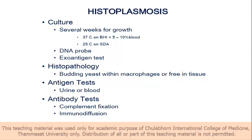In the U.S., whenever thermally dimorphic fungi are suspected, they will not use lacto-phenol cotton blue wet mount — they use only serological tests because they are afraid of infection. Histopathology is also similar — intracellular. Antigen tests can now use both urine and blood. Antibody tests are also available. But in Thailand, most of us use staining and culture.